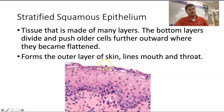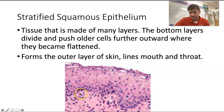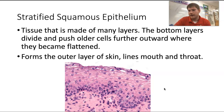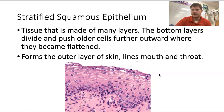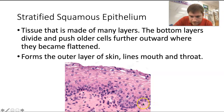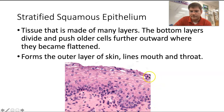Stratified squamous epithelium is tissue made of many different layers and is also flat. The bottom layers are where a lot of mitosis — cell division — happens. Cells get pushed up and as they do, they get more flat. They're a bit more cube-shaped at the bottom, but flat like pancakes at the top. Your skin is the biggest example; it's also in your mouth and throat. We'll discuss this more when we cover the integumentary system, including how cells get keratinized. The skin on your hands is just dead skin cells — they're only living towards the bottom.